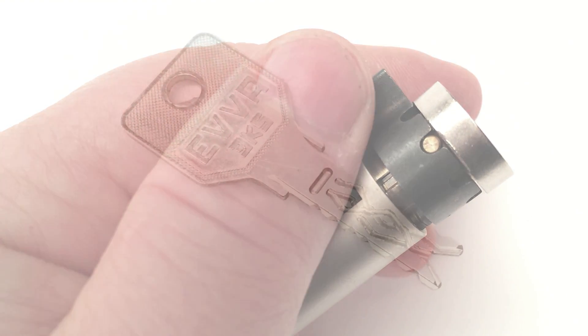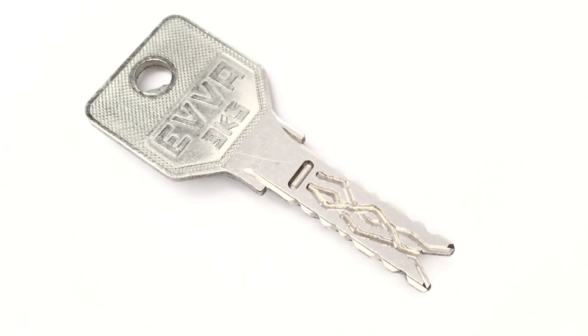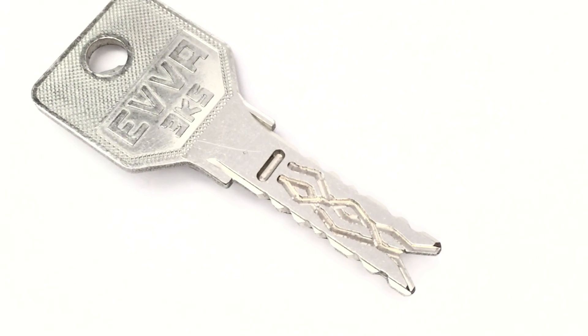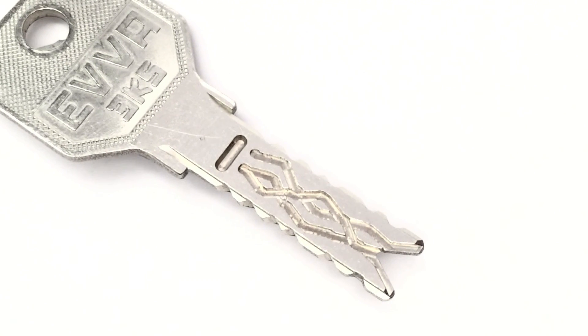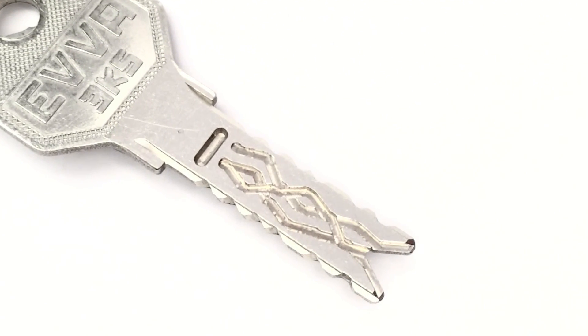3KS stands for Three Curves System, and with the special shape from the top of the key, as you see, this catches and guides the sliders to the correct positions.